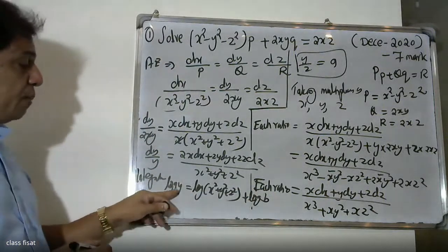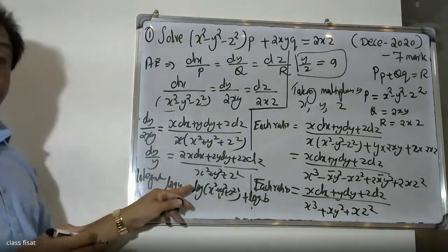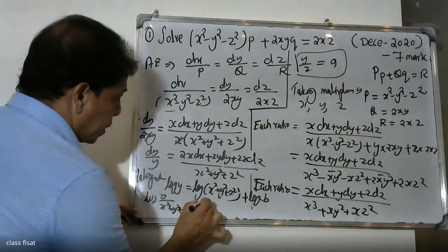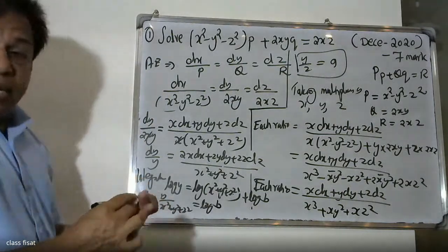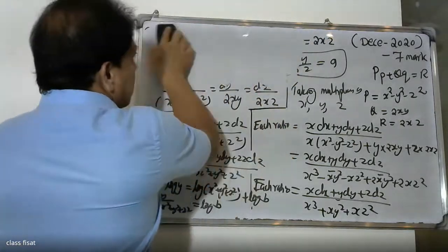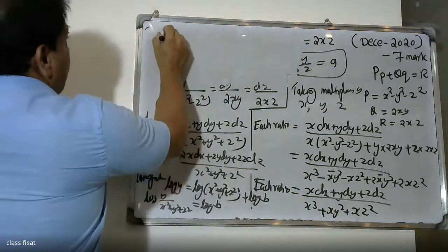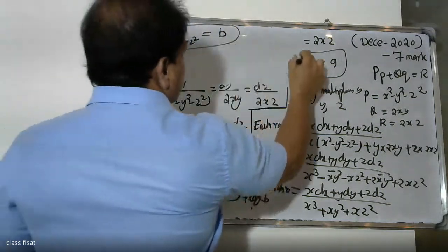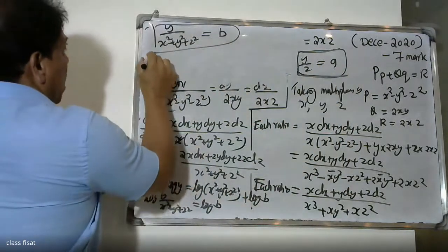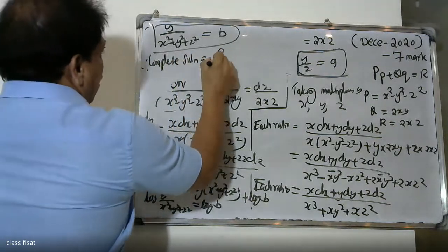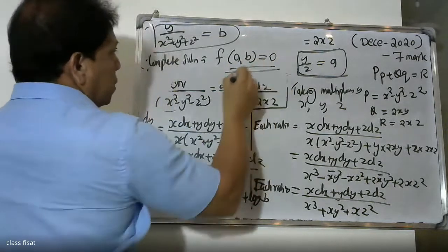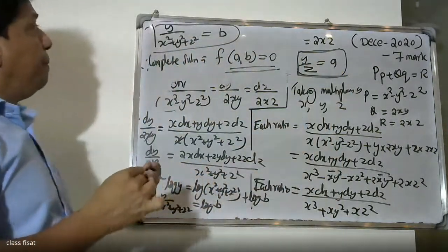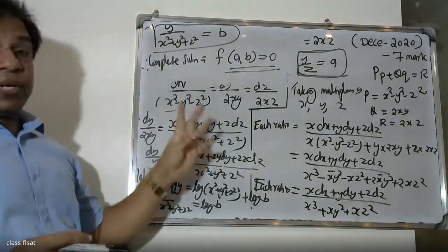The right-hand side integrates to log(x² + y² + z²). So log y minus log(x² + y² + z²) equals a constant, giving log(y / (x² + y² + z²)) = log b. Therefore y/(x² + y² + z²) = b, which is the second constant. The complete solution is f(a, b) = 0, where a = y/z and b = y/(x² + y² + z²).